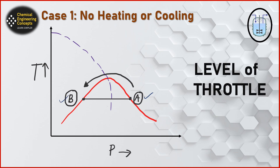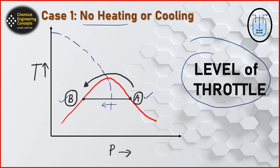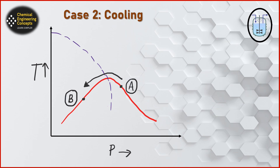In the first case, starting at point A and ending at point B: the pressure decreases and throttling is happening, but there is no change in temperature — the level of throttle matters. In the second case, if we start at the correct point and apply sufficient throttle, there is a decrease in temperature and cooling occurs. In the third case, heating occurs. So the level of throttle is very important.